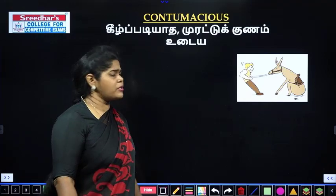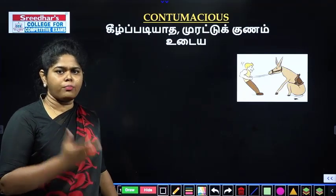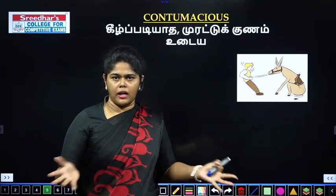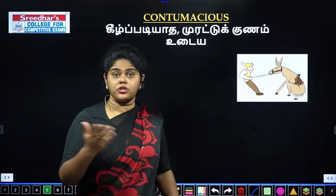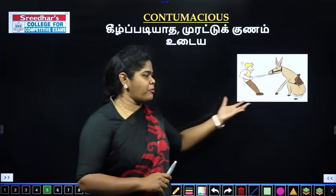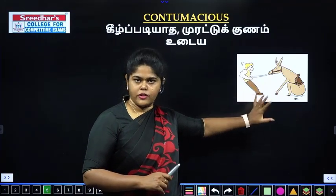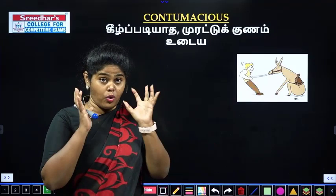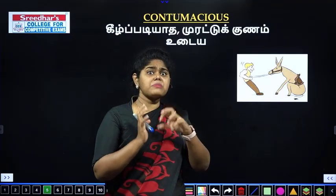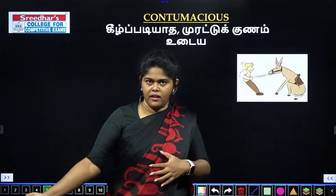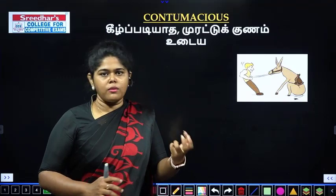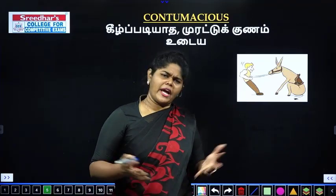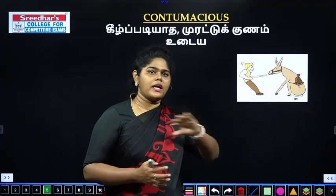Next word is contumacious. Contumacious means stubbornly disobedient — a person who is disorderly, disaffected, or has a stubborn character. Someone you cannot change — you can call them contumacious. It is an adjective. Like a horse being pulled but not moving — some people are correct like that. They will not accept things. This person is very contumacious — you can't bring them to a particular mode. Where you are trying to pull people but they won't do it — that is contumacious.